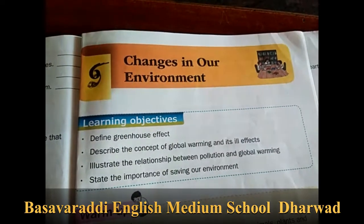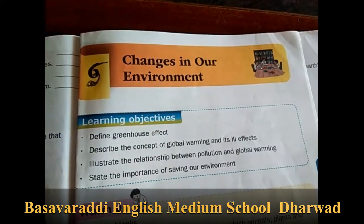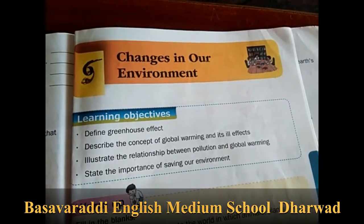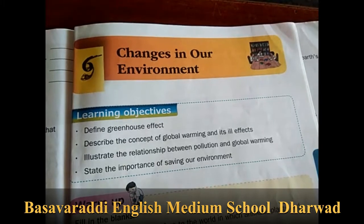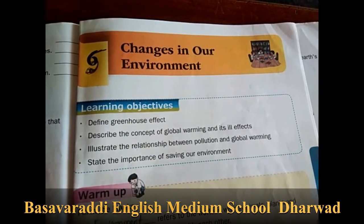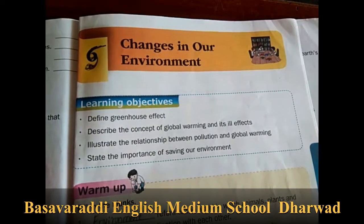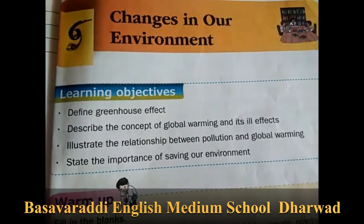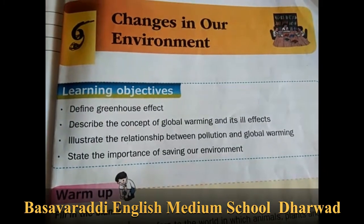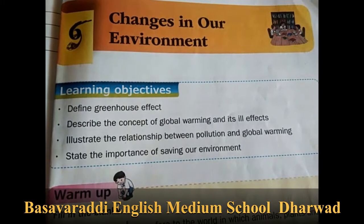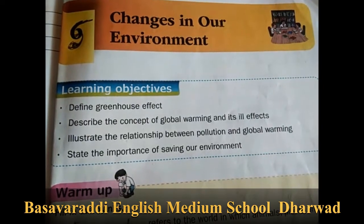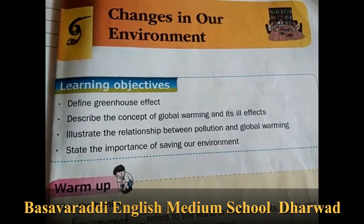Hello children, welcome to the science subject. This is the 5th standard, 5th lesson. The name of the lesson is 'Changes in Our Environment'. In this lesson we will discuss some learning objectives: define greenhouse effect, describe the concept of global warming and its ill effects, illustrate the relationship between pollution and global warming, and state the importance of saving our environment.